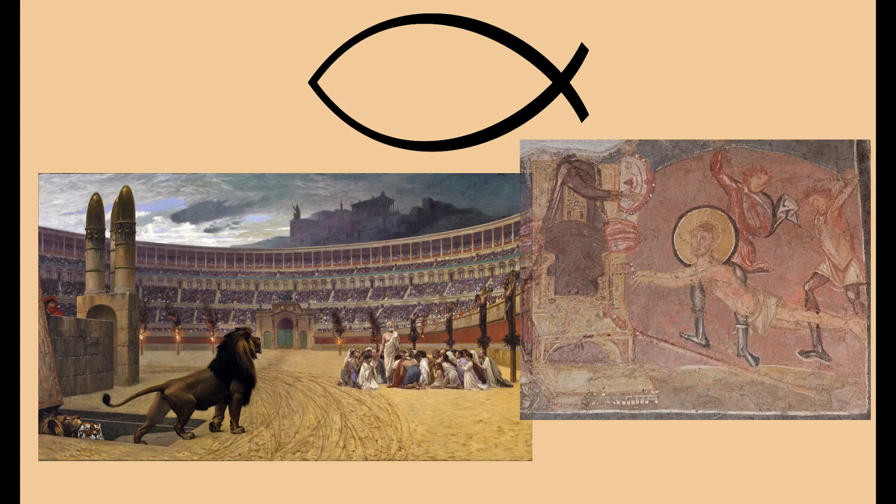This symbol has been used since the very first centuries of the church, during the great persecutions. We're told — and there's no good reason to disbelieve it — that in order to recognize other believers, people would do things such as when they met a stranger, they'd draw one of the arcs in the sand with their finger in a nonchalant fashion.